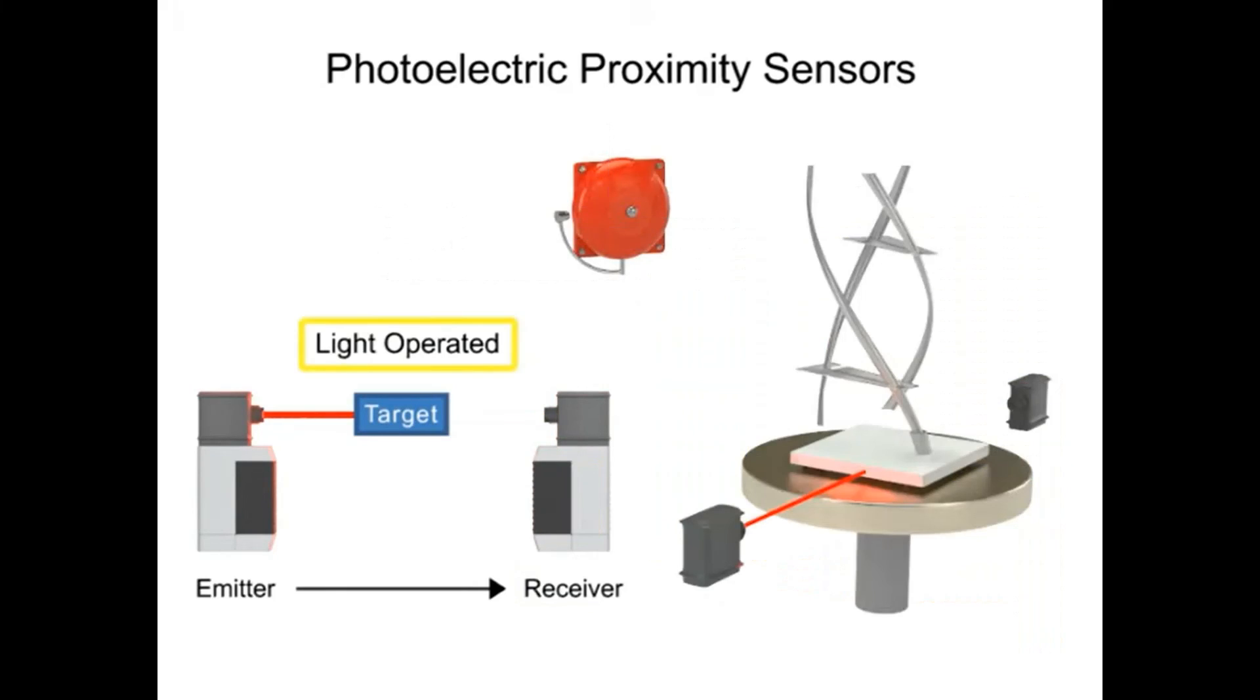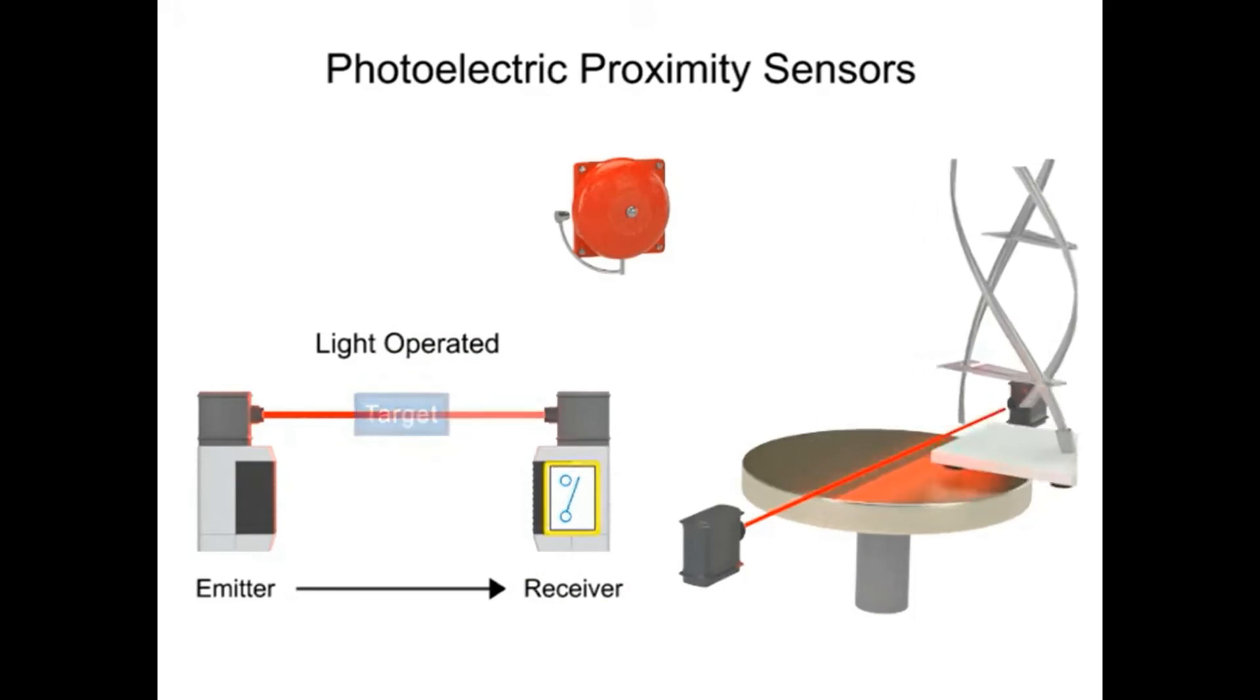Conversely, in this light operated mode example, the absence of light being received by the receiver is normal. When the object is removed from the table, the switch is triggered and the alarm will sound.